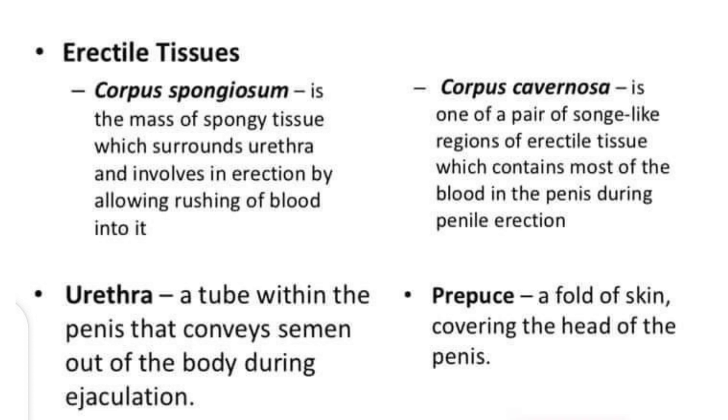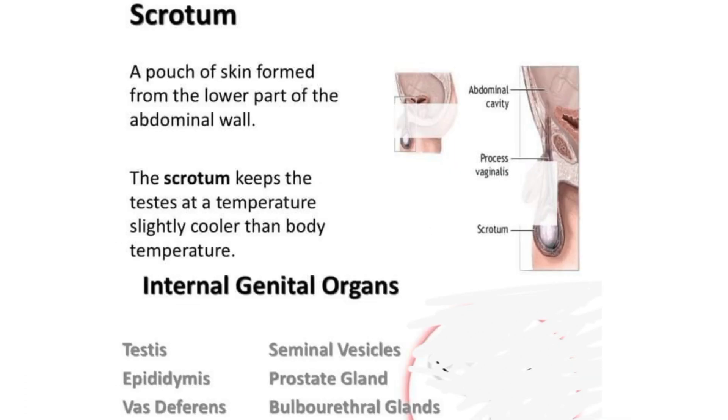The urethra is a tube within the penis that conveys semen out of the body during ejaculation. The prepuce is the fold of skin that covers the head of the penis.